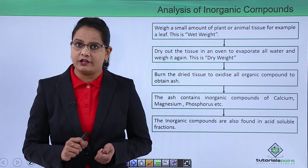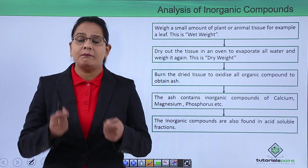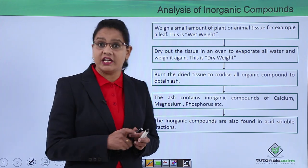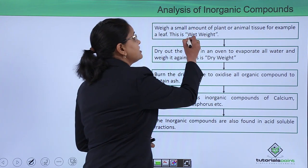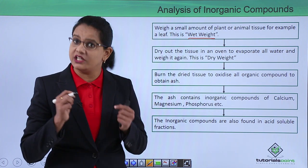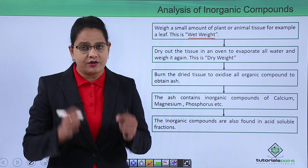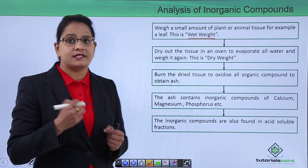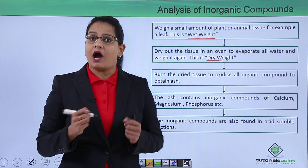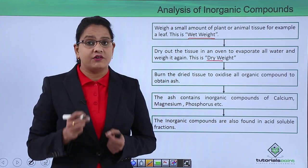For analysis of inorganic components, again we take a living tissue, which can be animal tissue or plant tissue, but preferably we take a leaf. We take the weight of the leaf - this weight is known as wet weight. Why wet weight? Because here the weight of water is also included. Now we evaporate the water by drying it out in an oven. Next, we weigh again - this weight is called dry weight. After we have taken the dry weight, we burn the tissue.